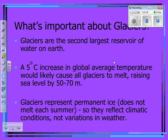Glaciers also represent permanent ice — that means they don't melt each summer. So they reflect climatic conditions, not the variations in weather. Because the northern hemisphere is covered with ice, it controls the climate, not the short-term variations in weather.